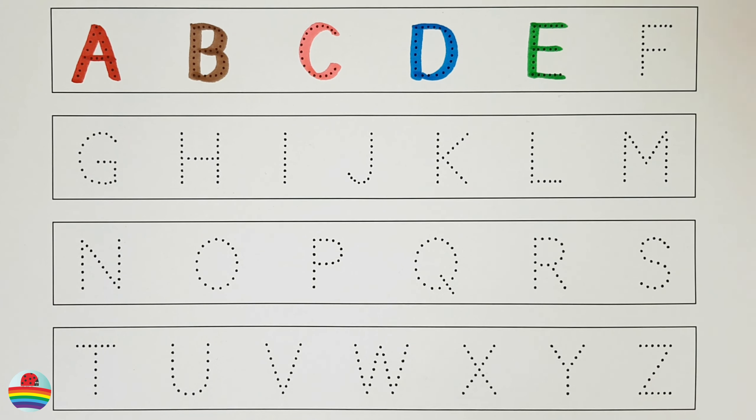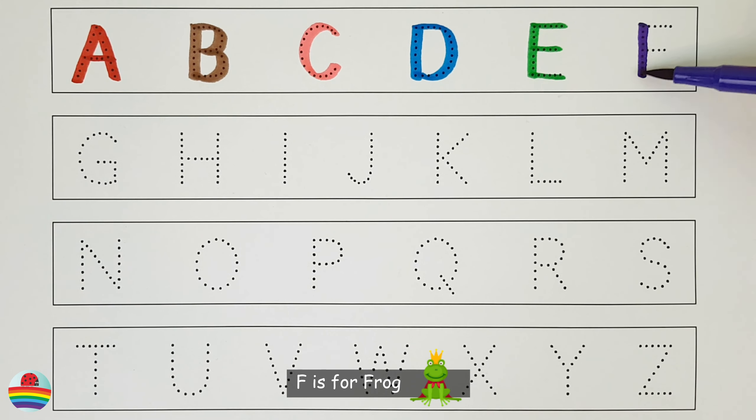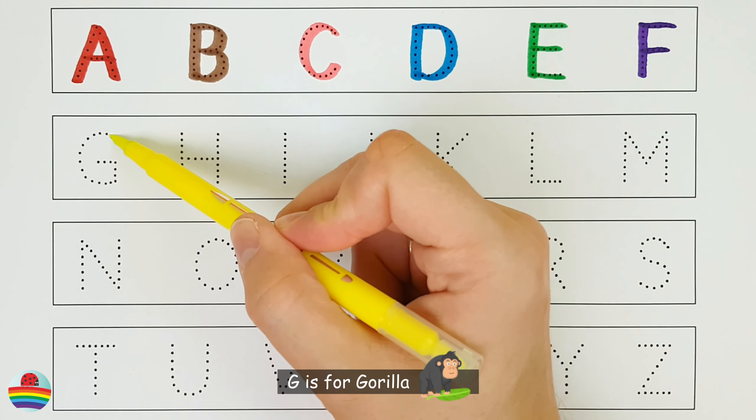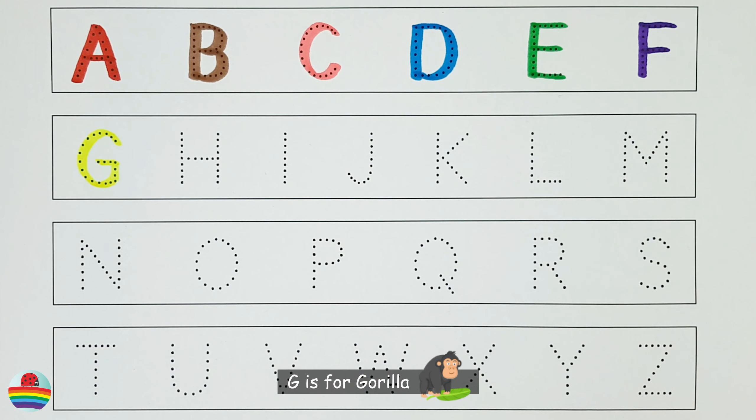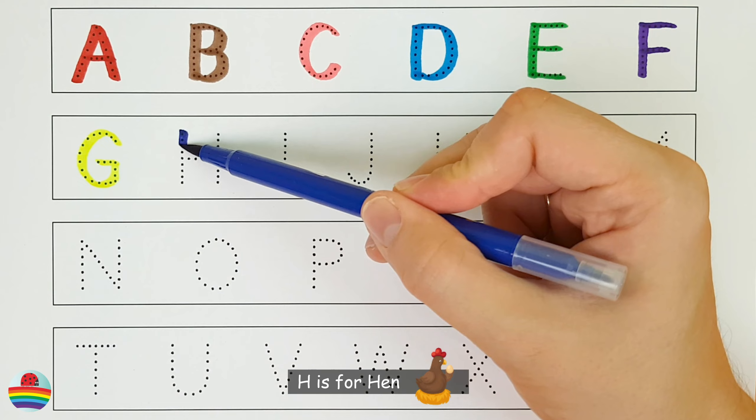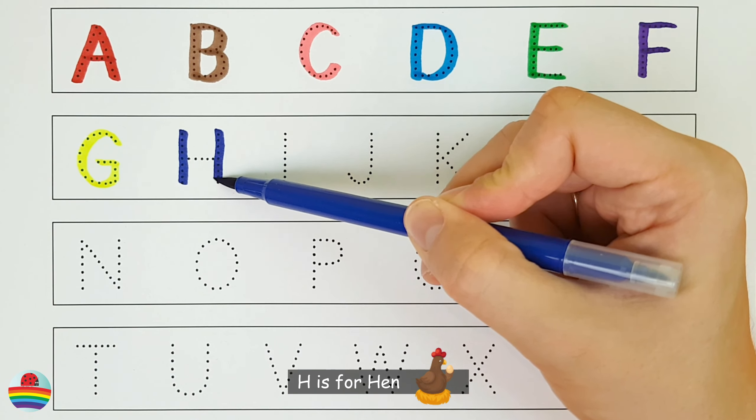D. D is for dinosaur. D. E. E is for elephant. E. F. F is for frog. F.